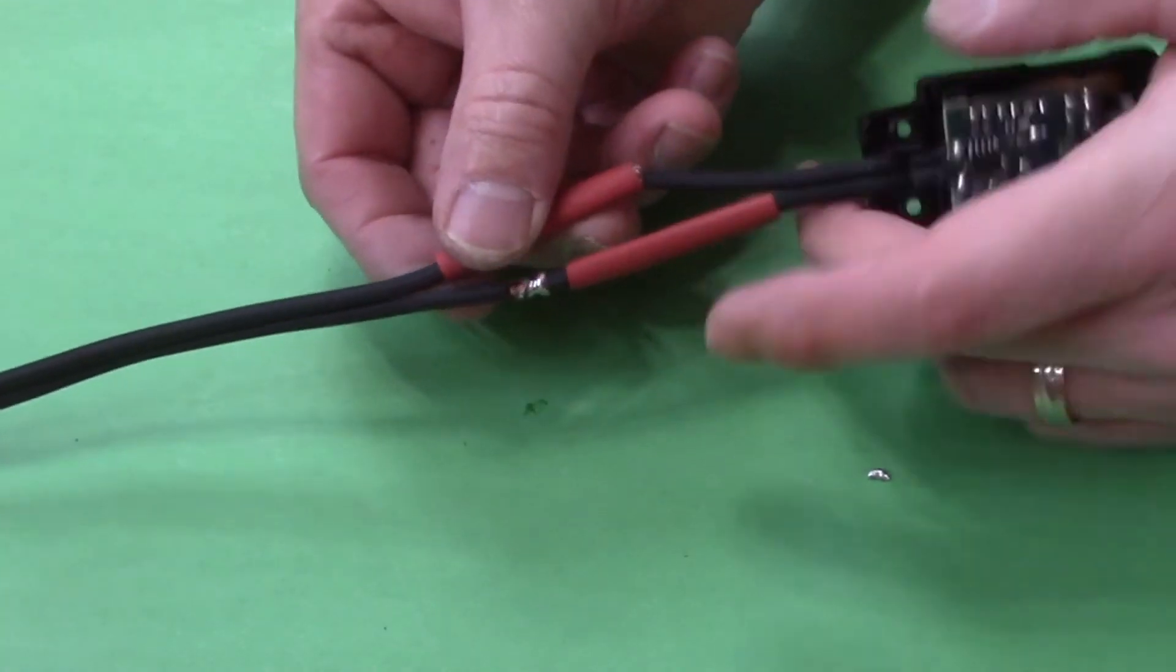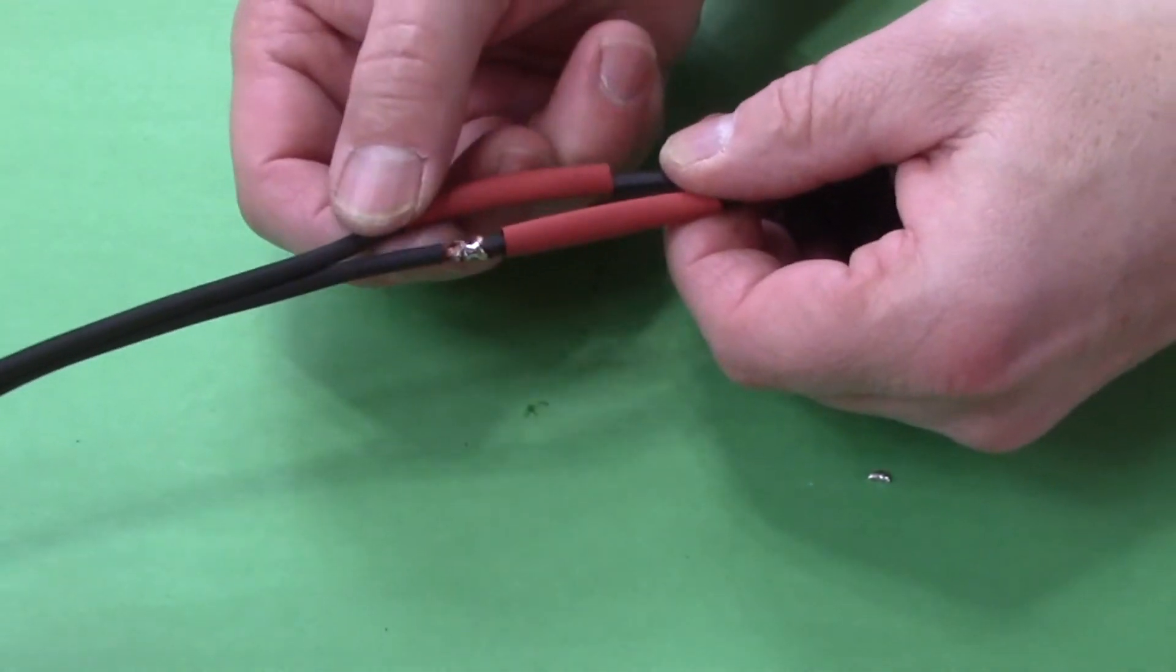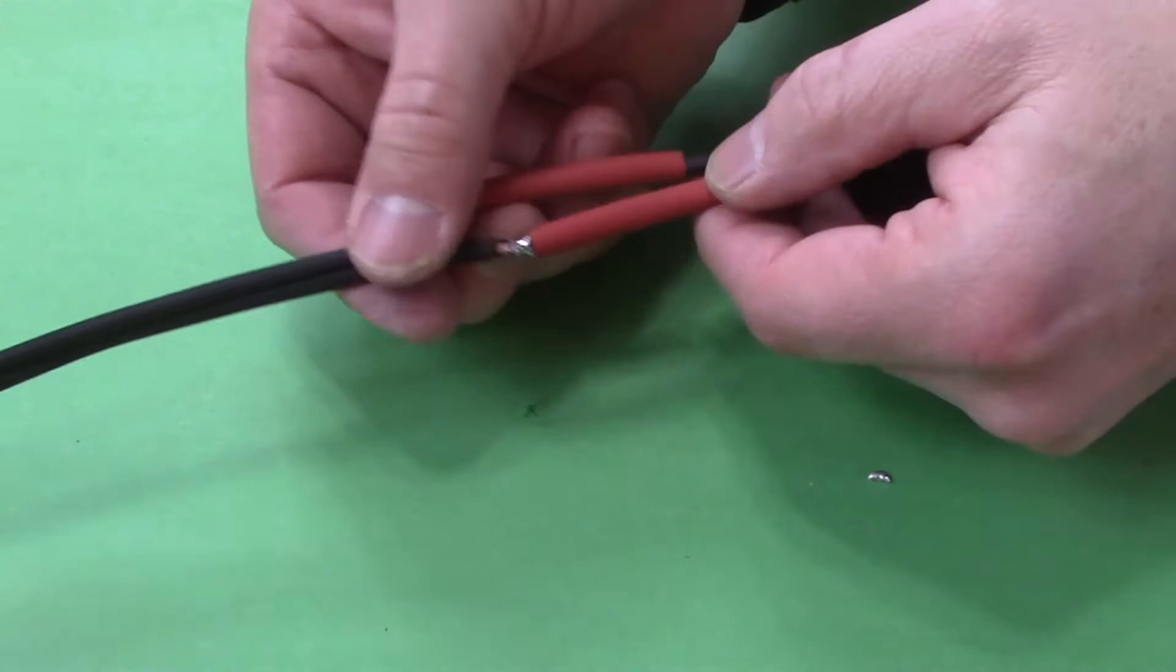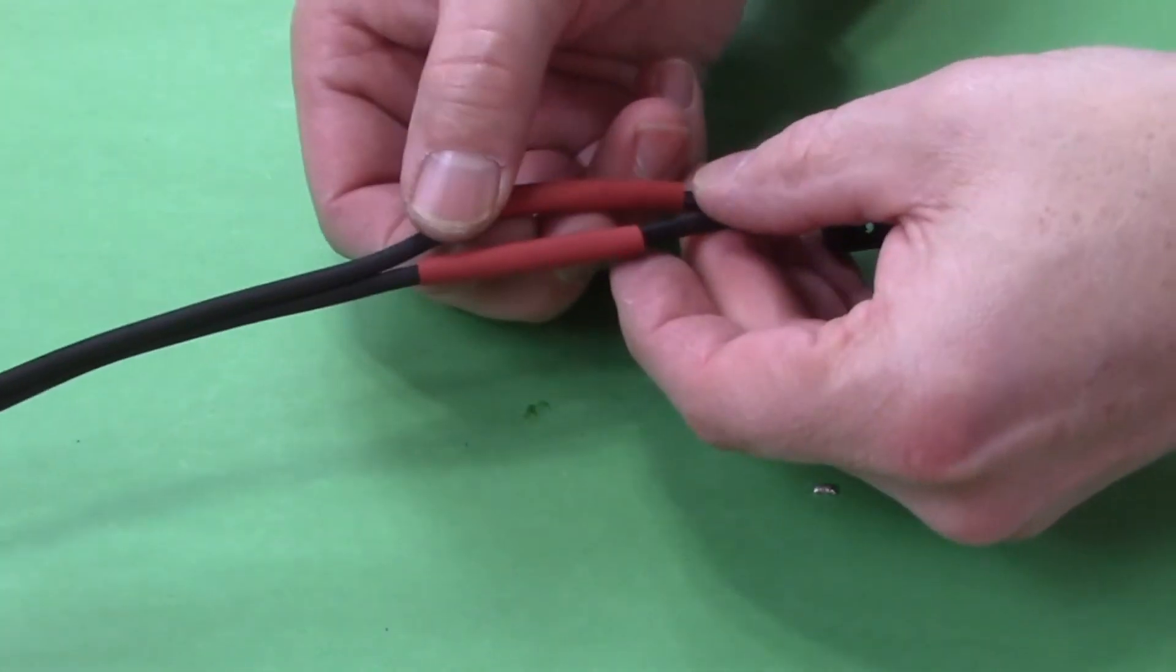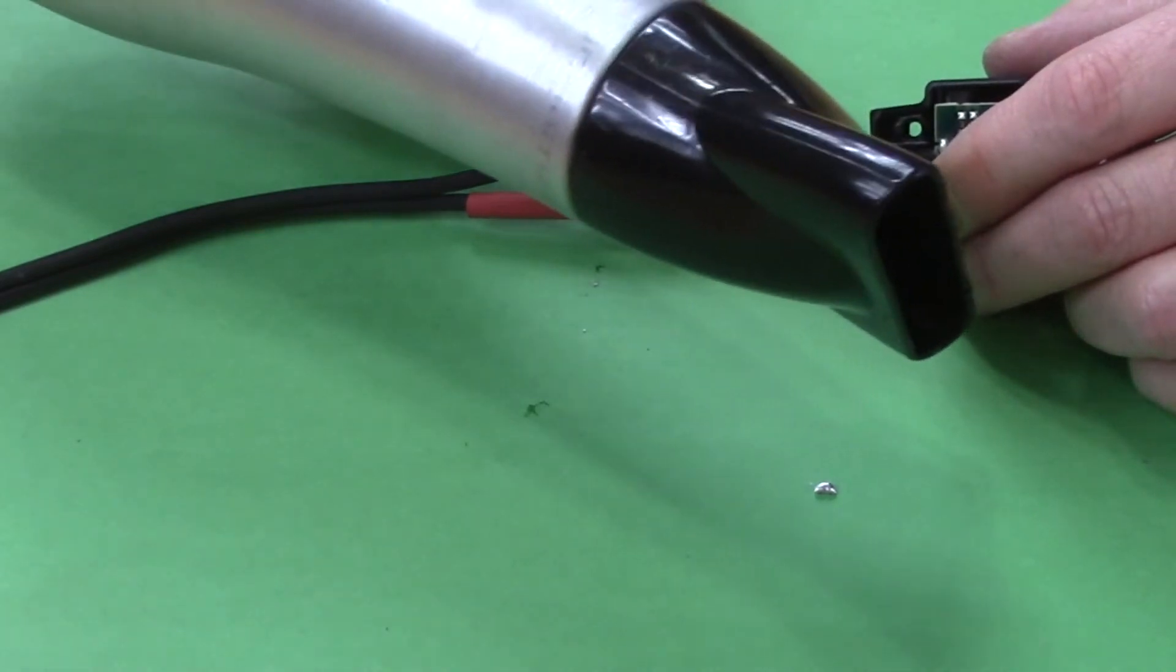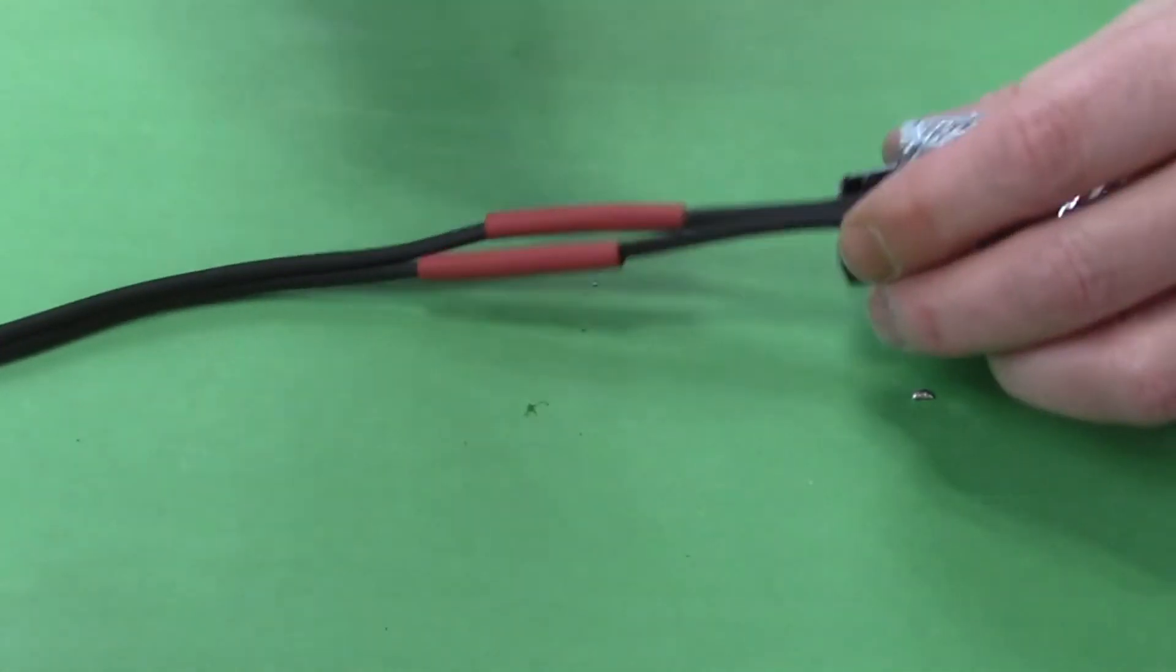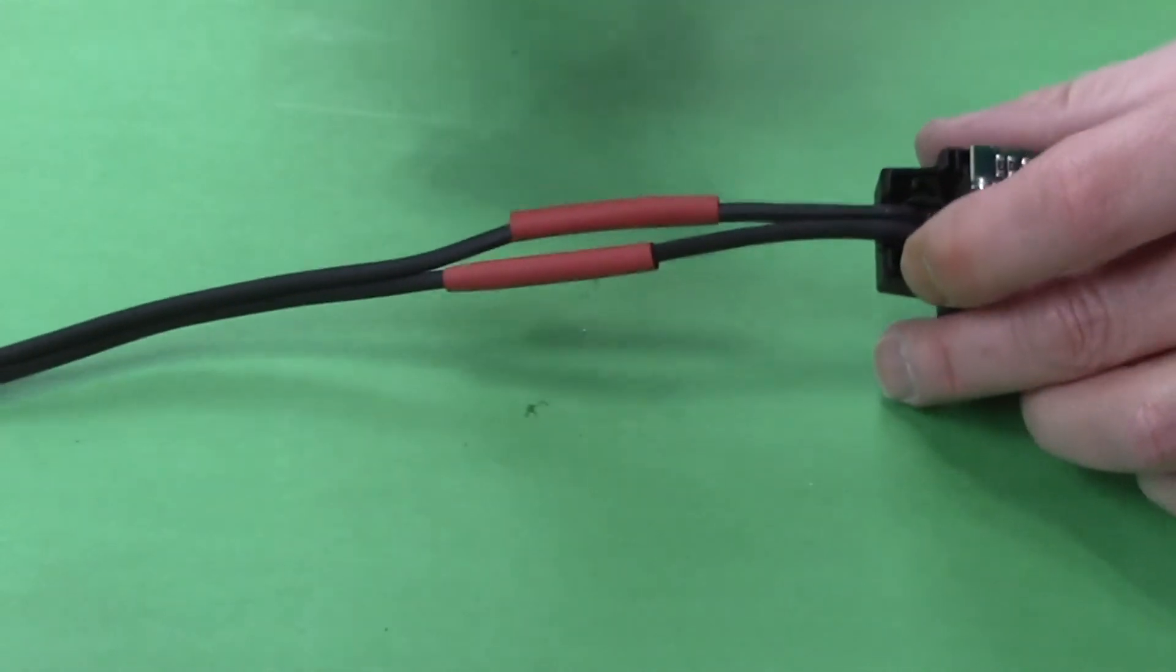Now we're just going to take our shrink wrap, slide it over our connections. And we're going to take our backup hair dryer because like Survivorman says, two is one, one is none. And we're going to just heat it up and it will shrink this around the wire.